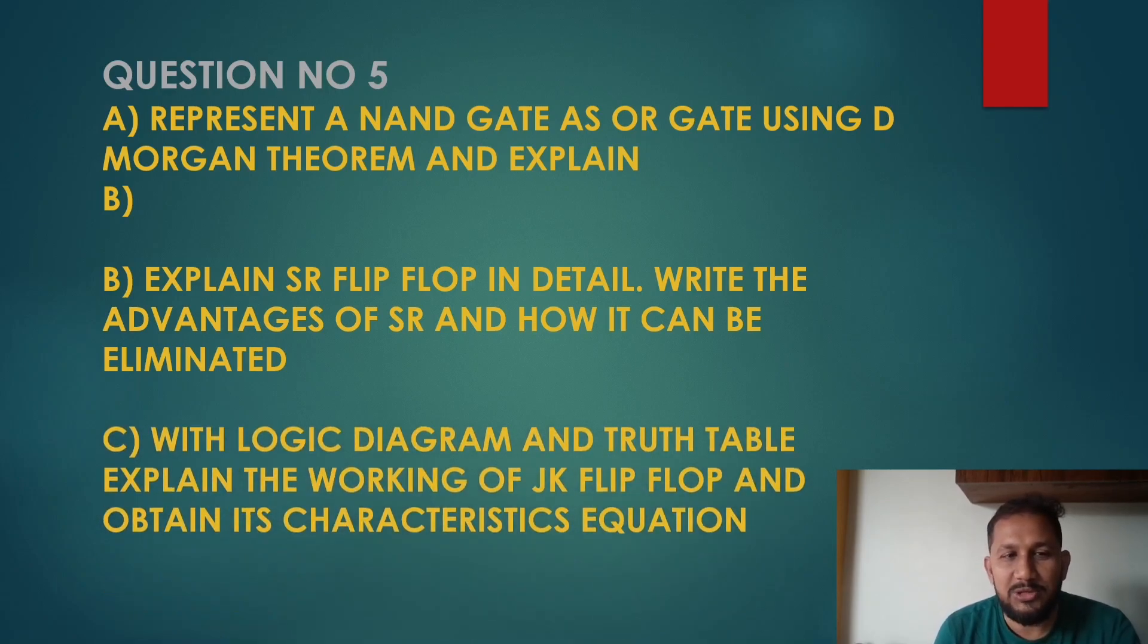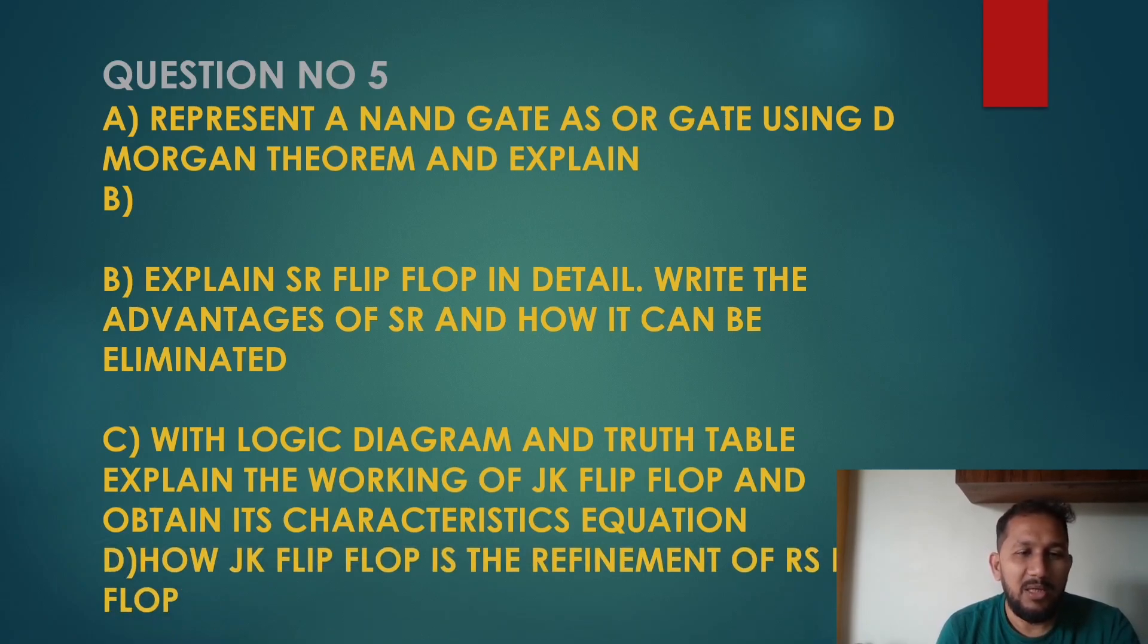Write the advantages of SR and how it can be eliminated. With logic diagram and truth table, explain the working of JK flip-flop and obtain its characteristic equation. JK flip-flop truth table and characteristic equation, the definite question. How JK flip-flop is refinement of RS flip-flop? Actually, in RS flip-flop, JK flip-flop is mainly violation of rules. In it, data has 0011 forbidden data. If you want to avoid, JK flip-flop will be developed.